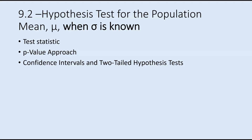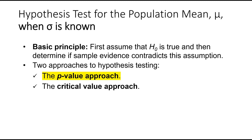In this section, we're going to be hypothesis testing for the population mean mu when sigma is known. When sigma is known, we're going to assume the null is true, and then we're going to be using the p-value approach.